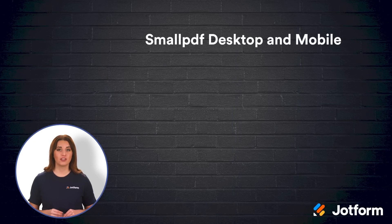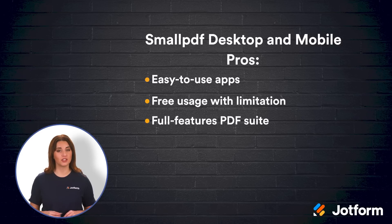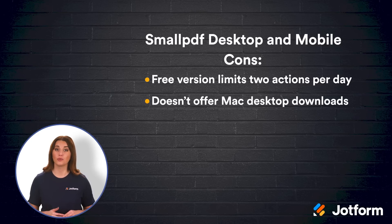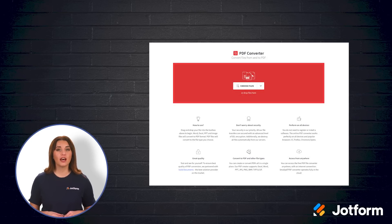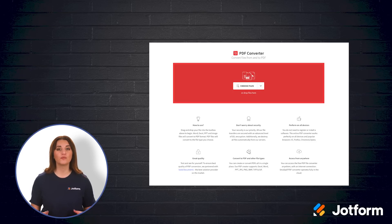Finally, we have the Small PDF desktop and mobile converter. With this converter, you'll have access to easy-to-use apps for iOS, Android, or Windows. It's free to use with some limitations and offers a full-featured PDF suite. The free version limits two actions per day, and if you're using a Mac, you won't be able to download to your desktop. Overall, Small PDF is a versatile PDF converter, offering desktop, mobile, and online versions. These applications are user-friendly and make downloading your converted PDFs free. If you're using Chrome, Google Workspace, or Dropbox, you can also use Small PDF's specific extensions. If you're doing a lot of converting, however, you'll likely need to upgrade to the paid version.